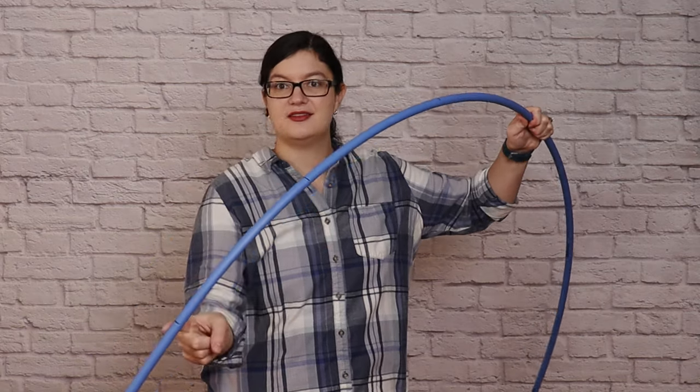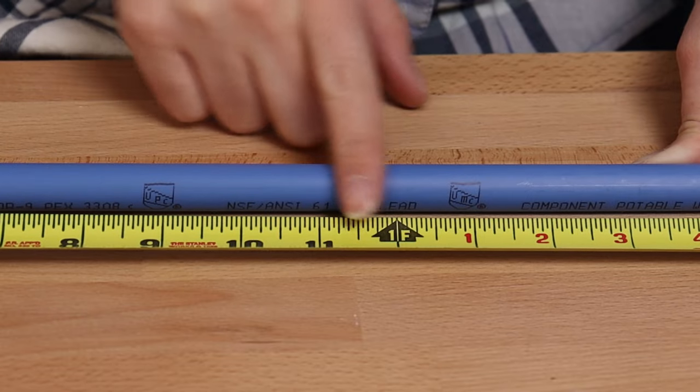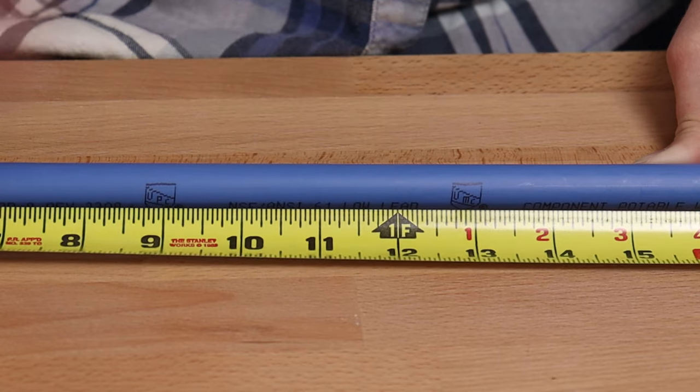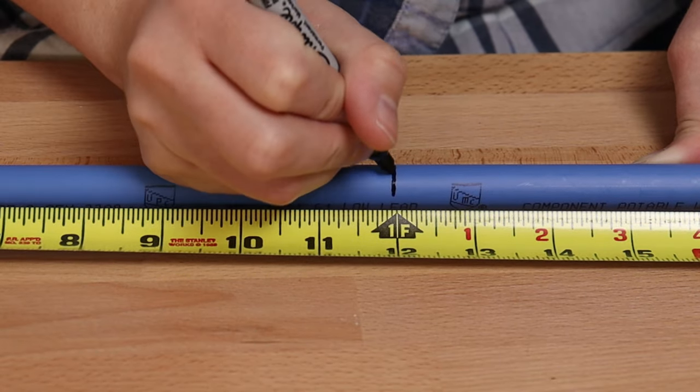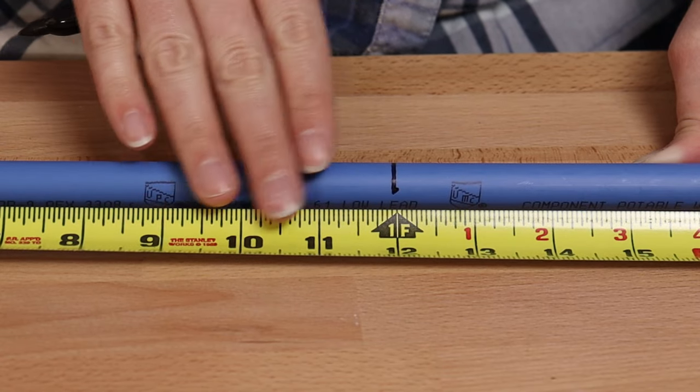Across the entire length of my pipe, I've decided to put a mark every 12 inches using a permanent marker. These marks allow me to quickly and consistently change up the sizing of my arch, which I'll show you how to do in just a moment.